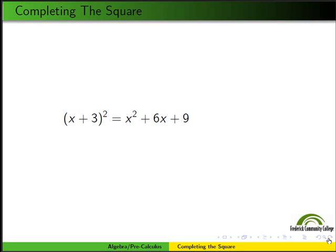If you don't see that immediately, you should stop the video and rewrite (x + 3)² as (x + 3) times (x + 3). Utilize the distributive property and you'll soon find that this equals x² + 6x + 9.